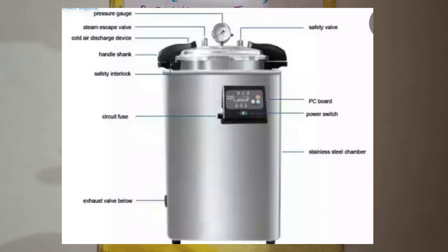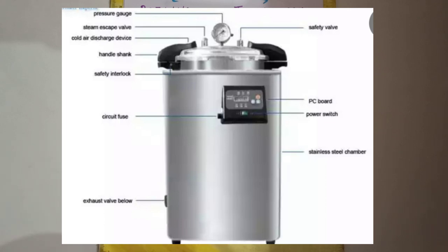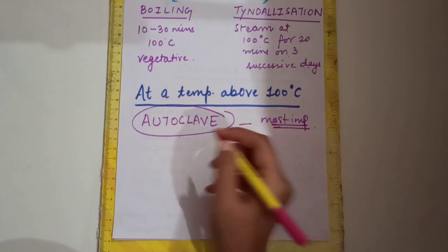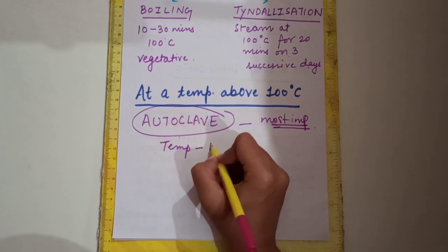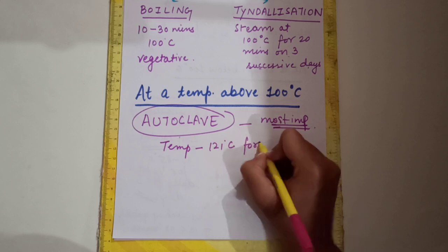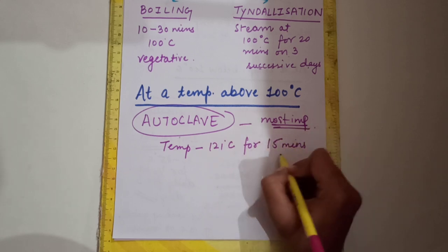You can see its components in the diagram on screen. The principle of autoclave is that steam above 100 degrees Celsius has better killing power than dry heat. While hot air oven operates at 160 degrees Celsius, steam at 100 degrees Celsius has better killing power because bacteria are more susceptible to moist heat. The standard temperature used in autoclave is 121 degrees Celsius with a holding time of 15 minutes.